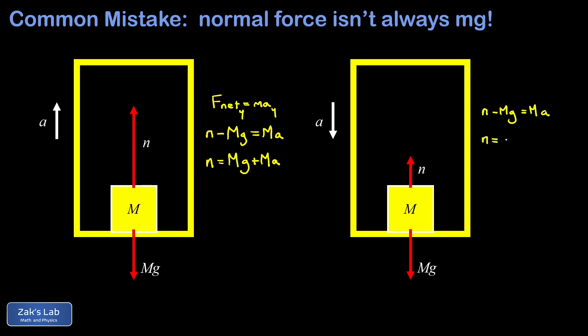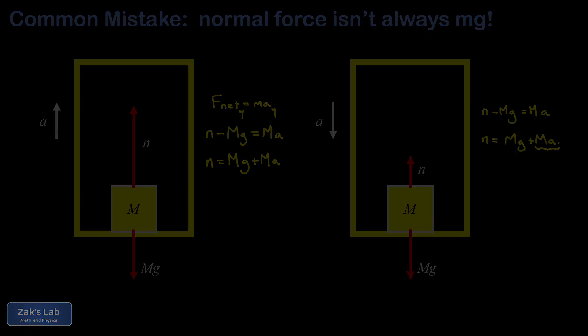So we arrive at the same result, n is equal to mg plus ma. But the difference here is that our a is a negative number because we're using a coordinate system where upward is positive. So this ma term is actually negative. And that means the normal force is going to be less than the weight. And notice that I drew n as a shorter vector than mg from the beginning because I knew we needed a net downward force on this block to give us a downward acceleration.